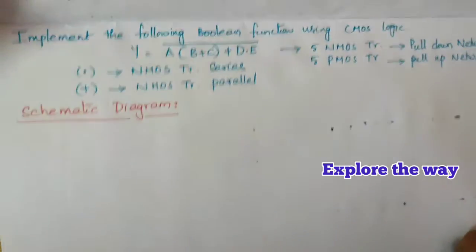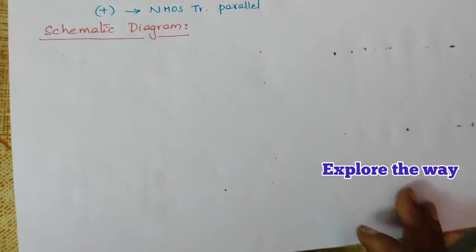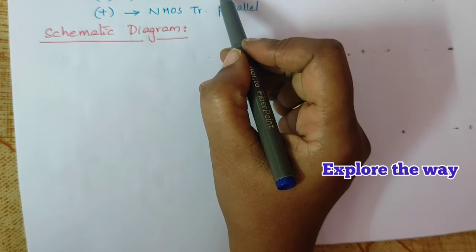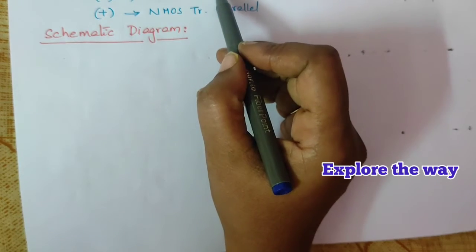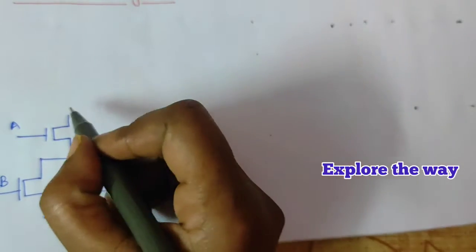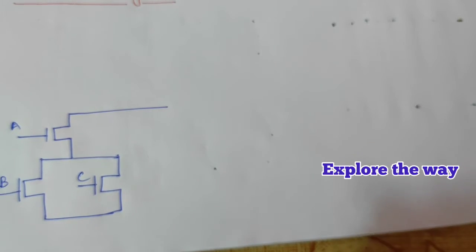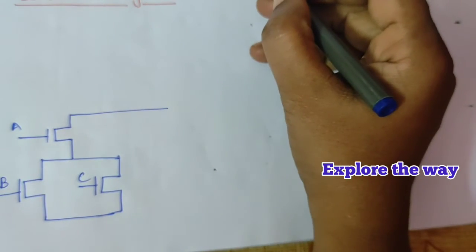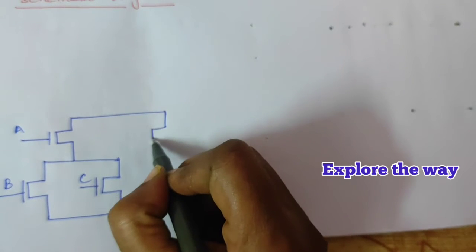Now first of all I will draw the pull-down network. In the pull-down network, b and c are in parallel, and a is in series with b plus c. Next we have plus, so connect the next term in parallel. Between d and e we have a dot operation, so connect d and e in series.